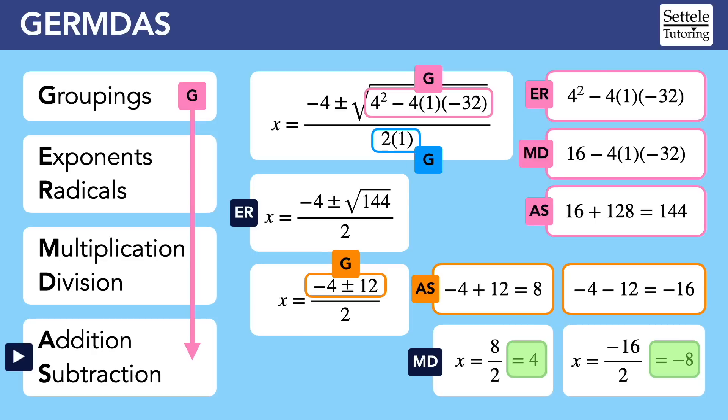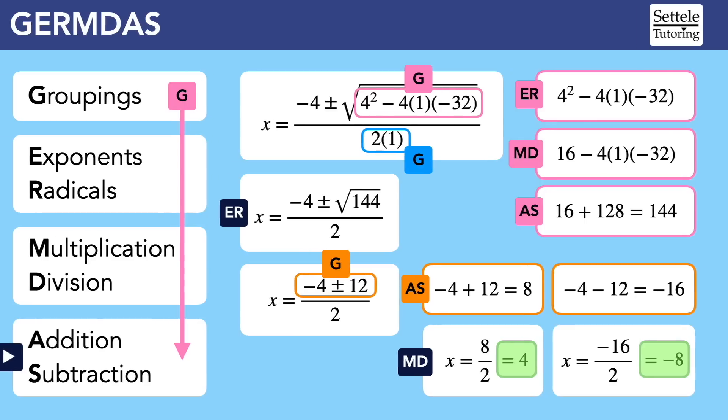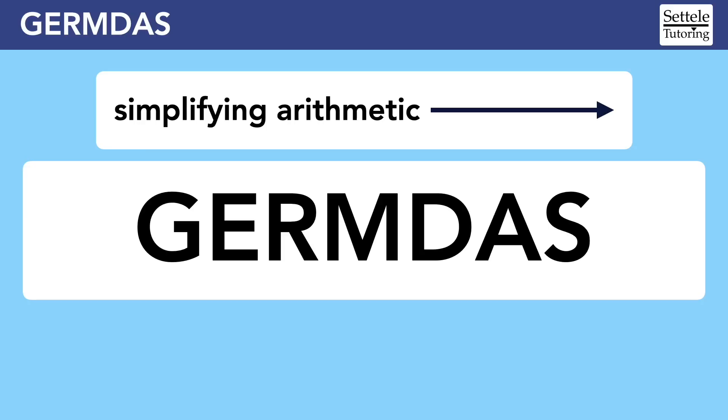At first this might seem like a very complicated way to do math, but I promise that it becomes automatic with practice. Plus, unless you're failing your algebra class in school, you're already doing a version of GERMDAS whenever you do math. Basically you follow the GERMDAS order of operations every time you simplify arithmetic.